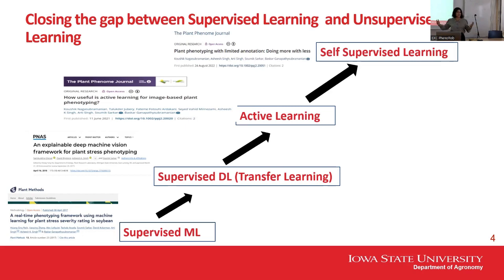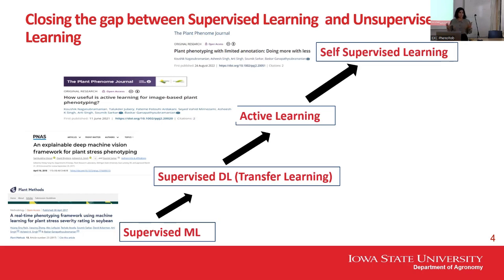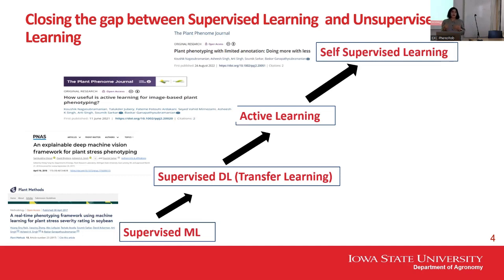With big data came the data annotation problem — how to annotate data. We worked on how to use active learning and human-in-the-loop labeling so that deep learning models can perform better. After working for several years, the most recent paper came around the idea of self-supervised learning — doing more with less — to handle annotation of bigger datasets.